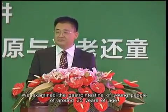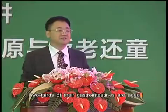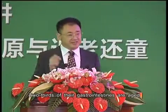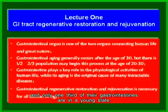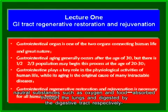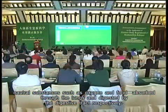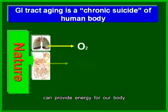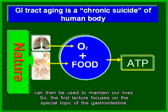When we examine the gastrointestine of young people around 25 years of age, two thirds of their gastrointestines are already aged, and only one third remain in a young state. Natural substances such as oxygen and food, absorbed through the lungs and digested by the digestive tract, provide energy to maintain our lives.